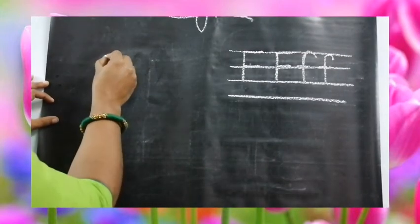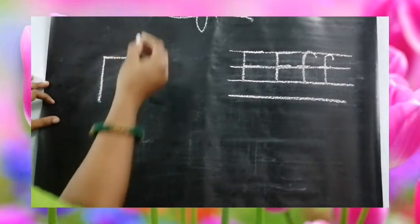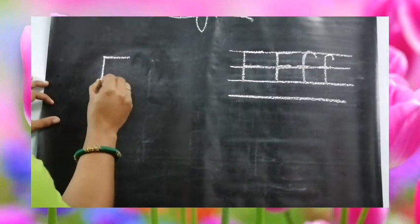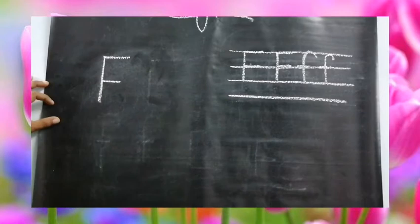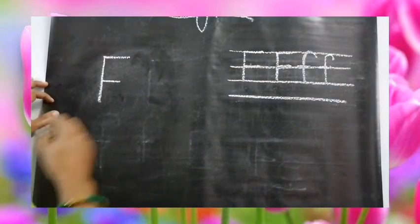Now we move on to how to write letter F. For writing letter F we need one standing line, in the top one sleeping line, and again one small sleeping line in the center. This is mama F or capital letter F.